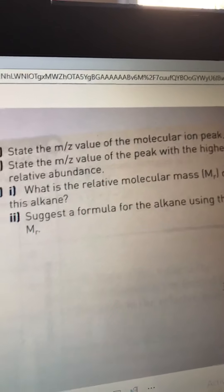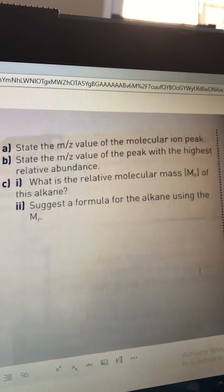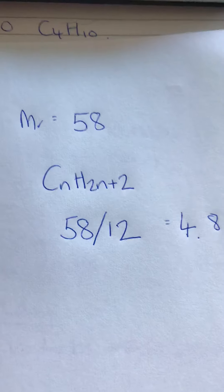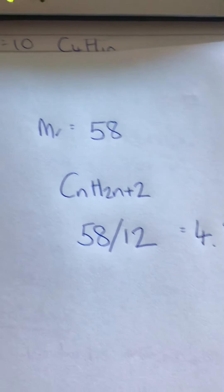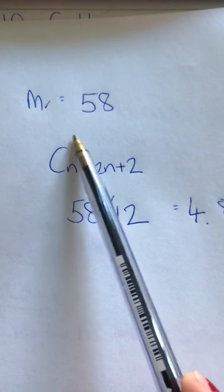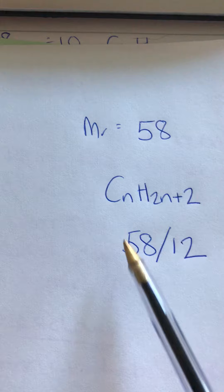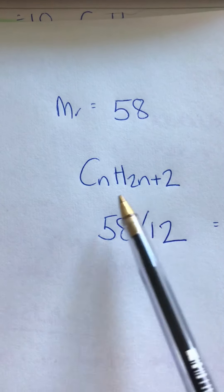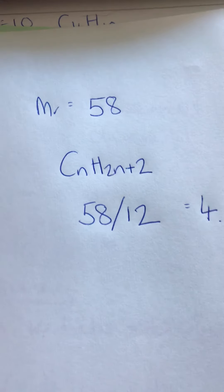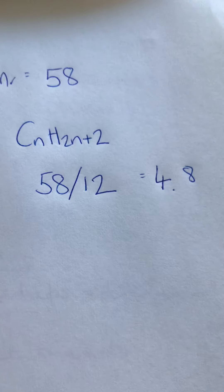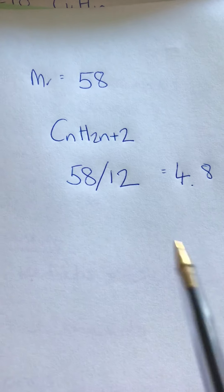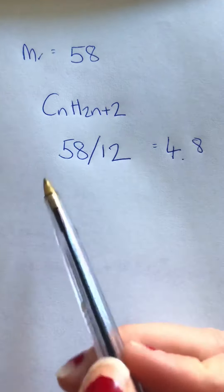And then the last question: suggest a formula for the alkane using the Mr. So tiny bit of maths required here. You've got the Mr of your compound and you know your general formula for an alkane.